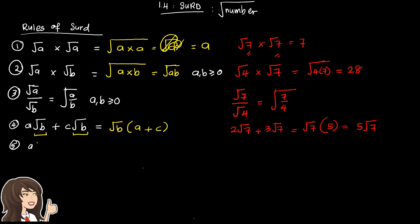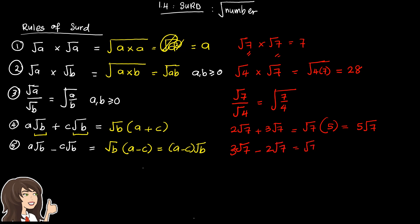Rule number 5: a√b − c√b. The difference is just the minus operation — it works the same way. You factor √b and get (a − c)√b. For example, 3√7 − 2√7 = √7(3 − 2) = 1√7 = √7.